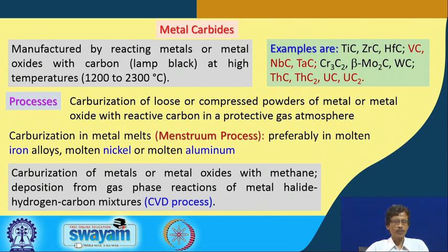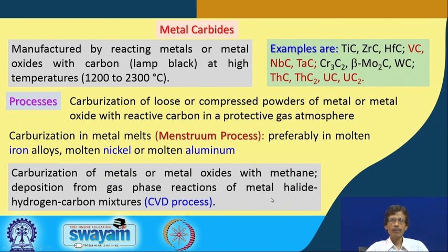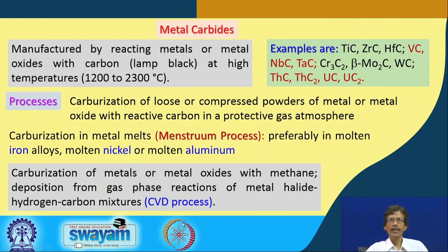Another process involves deposition from gas-phase reactions of metal halide, hydrogen, and carbon mixtures. In the CVD (chemical vapor deposition) process, instead of metal or metal oxide, the metal halide is used — the metal halides are highly reactive — along with hydrogen as the reducing agent and carbon as the carbide source.